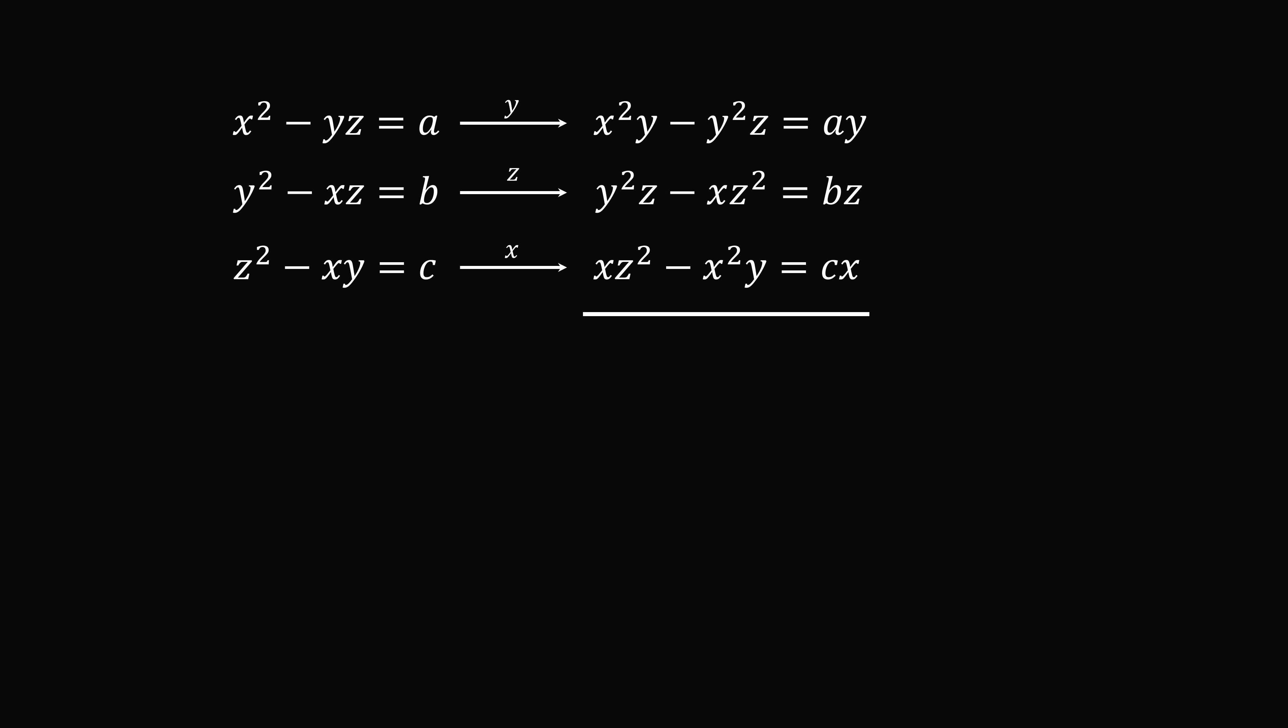Now, what happens if we add up these three equations? We get a magical cancellation. All of the terms on the left-hand side will cancel out. x squared y will cancel out, y squared z will cancel out, and xz squared will cancel out. We have 0 equals c times x plus a times y plus b times z.